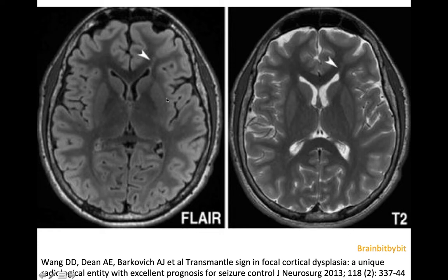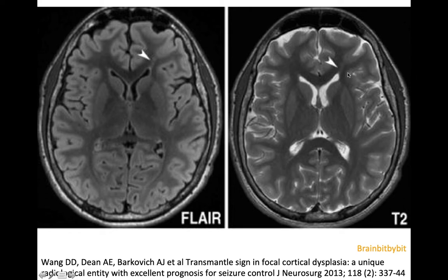As I said, because of the different glutamate receptors of the dysmorphic neurons, and also because the balloon cells might influence extracellular glutamate, FCD is often refractory to drugs. So surgery is a good option for focal cortical dysplasia type 2, and it has good results — probably also because the lesion is so well demarcated on MRI.